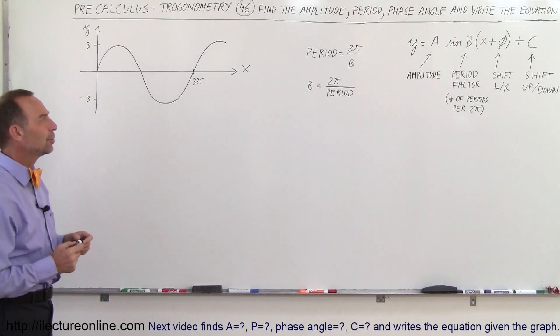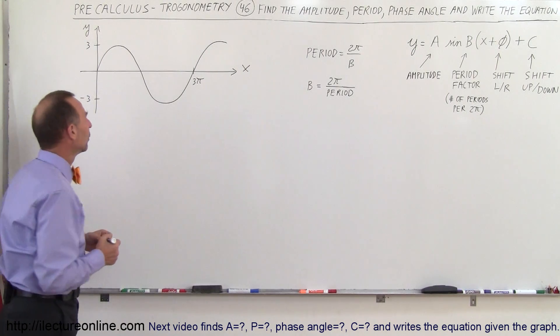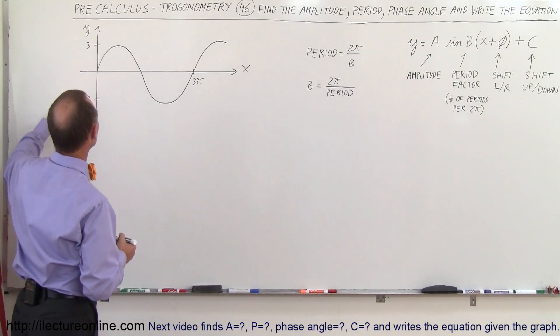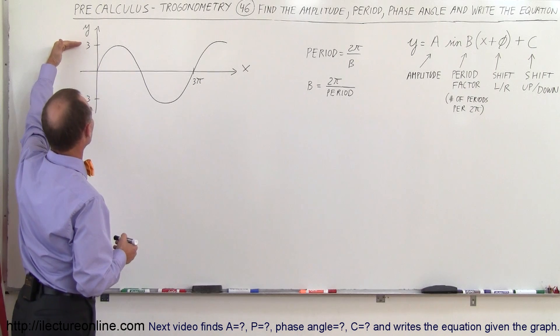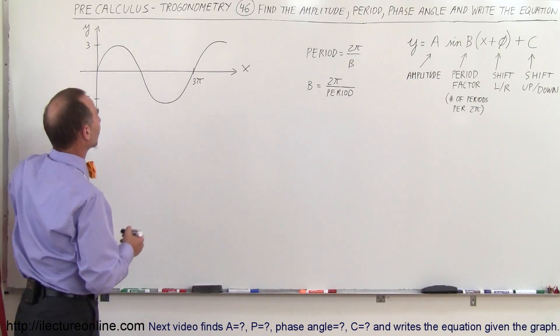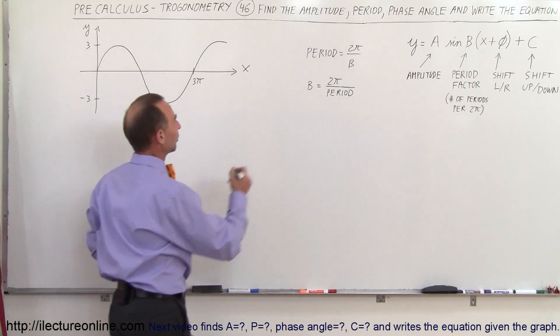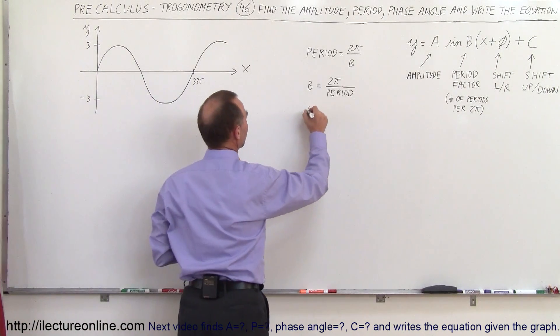So how do we do that? Well, let's try to find the amplitude. You can see the amplitude is from plus 3 to minus 3, so you know the amplitude is equal to 3.